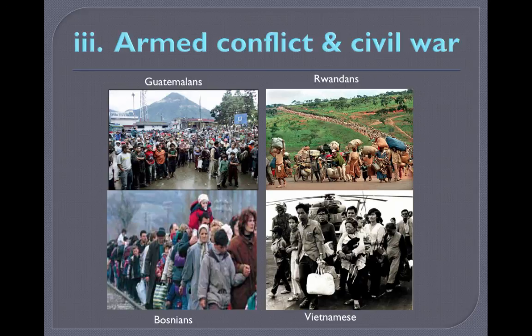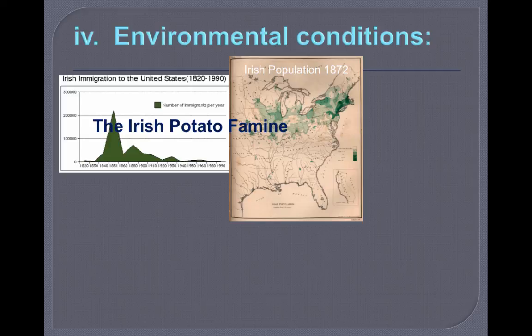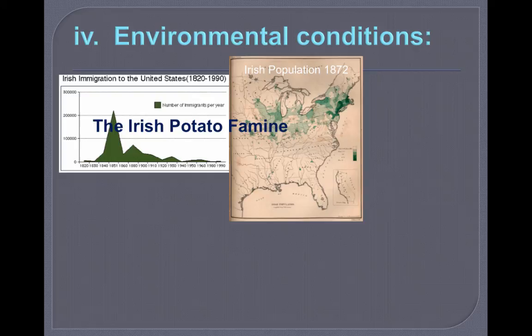Environmental conditions can also drive people away or cause them to migrate. Natural hazards and disasters — such as the Irish potato famine in the mid-1800s — drove a huge spike in Irish immigration to the US between about 1835 and 1860. A map from 1872 shows the Irish population using connected isometric lines, with a huge concentration of Irish folks in New York and Boston.